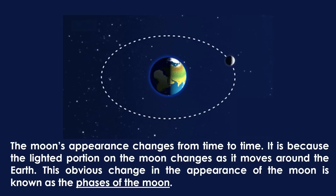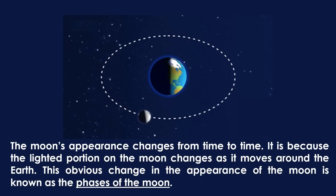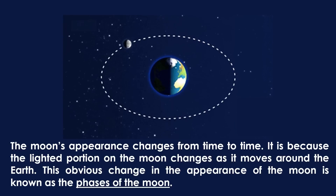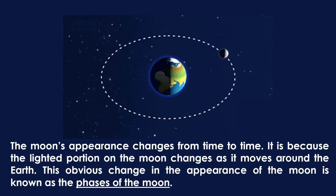The moon's appearance changes from time to time because the lighted portion on the moon changes as it moves around the Earth. The obvious change in the appearance of the moon is known as the phases of the moon.